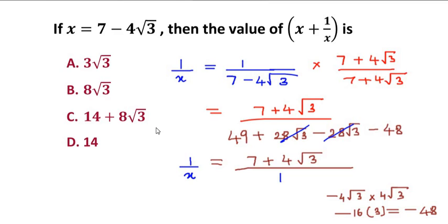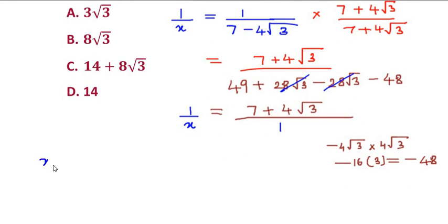Now let us substitute the value of x and 1 over x in this equation. So we have x plus 1 over x, so x was given as 7 minus 4 radical 3, and we got the value of 1 over x as 7 plus 4 radical 3, so plus 7 plus 4 radical 3.